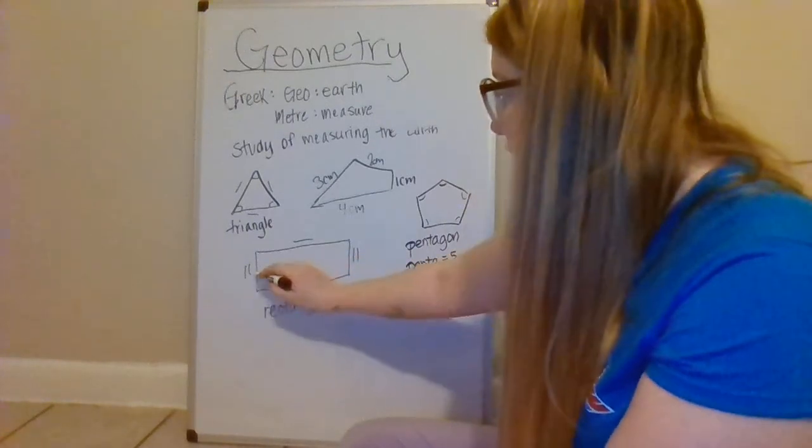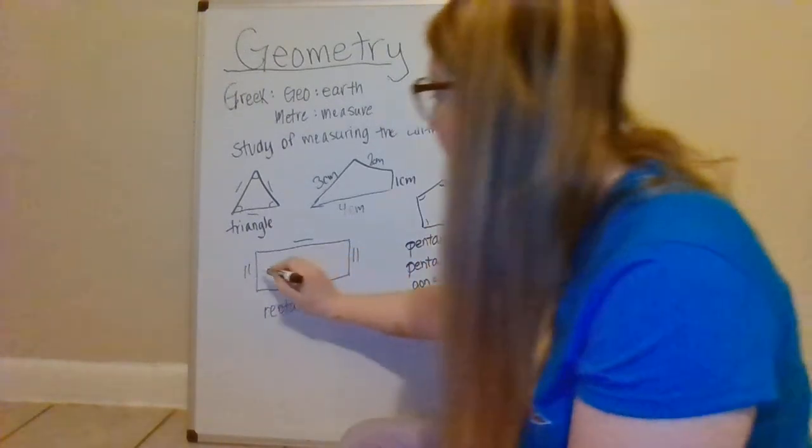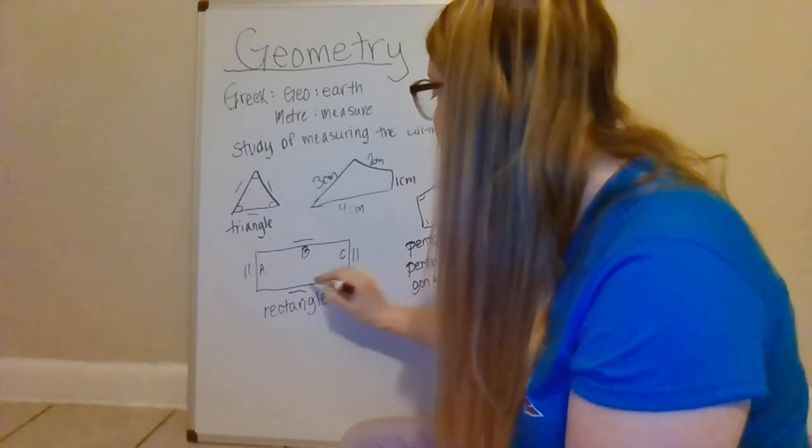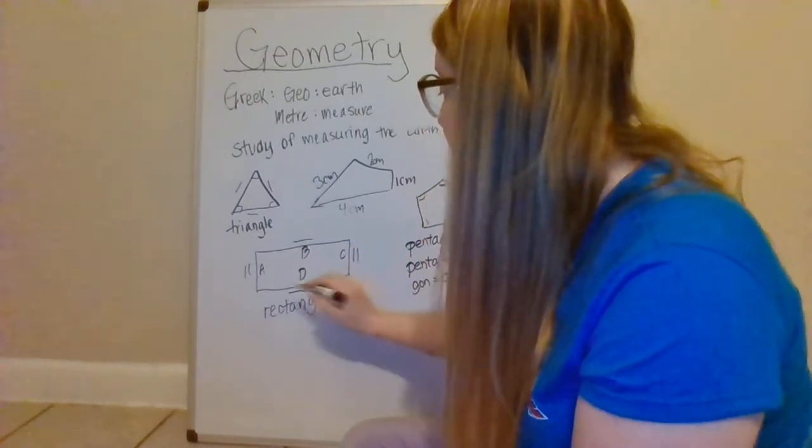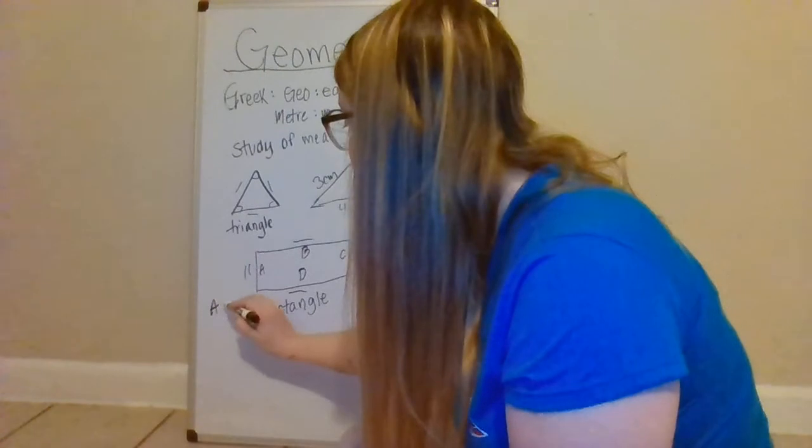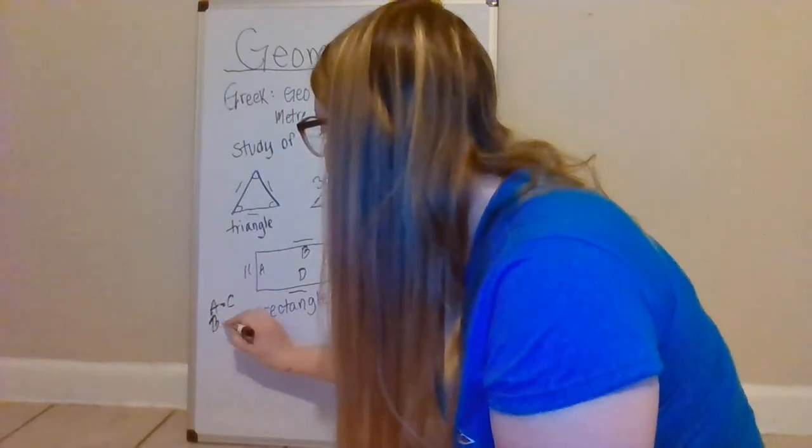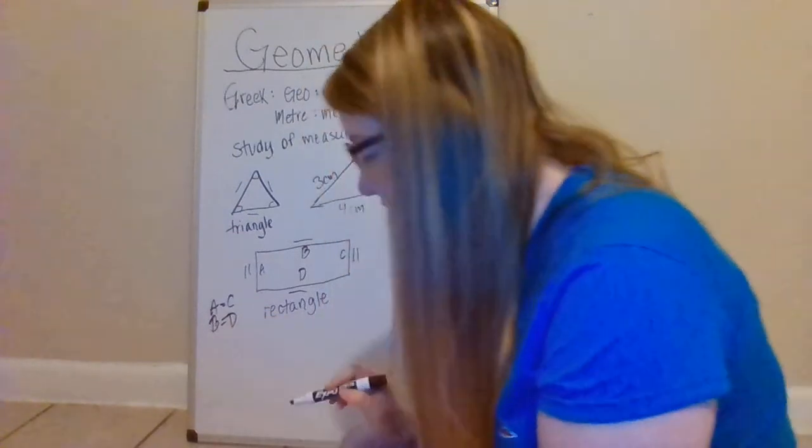So shapes can have opposite sides that are the same length. For example, if we were to label the sides and this was a, b, c, d, a could be the same as c and b could be the same as d.